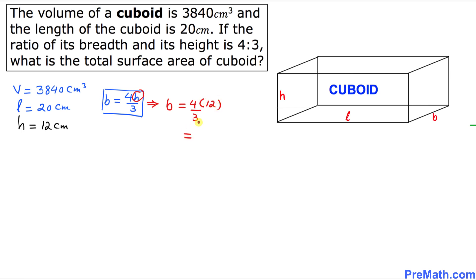Let's simplify this. This simply becomes 48 divided by 3 equals 16. So b turns out to be 16 cm, the breadth.